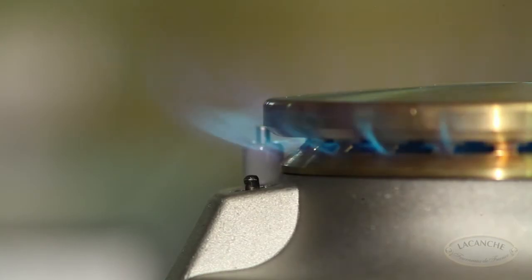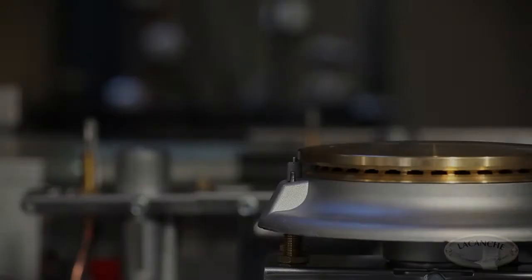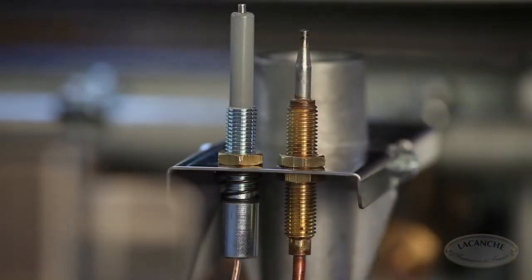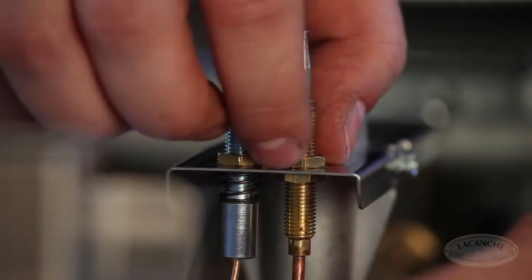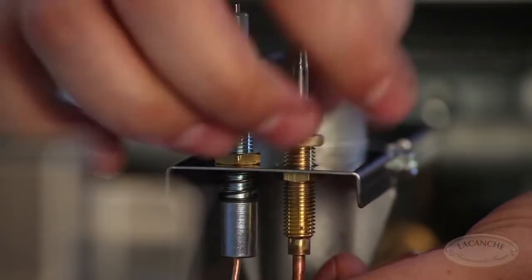If the probe is adjusted too low, the valve will not stay open and the burner will go out. Adjust the height of the probe by manipulating the position of the backing nut on the threaded shaft.